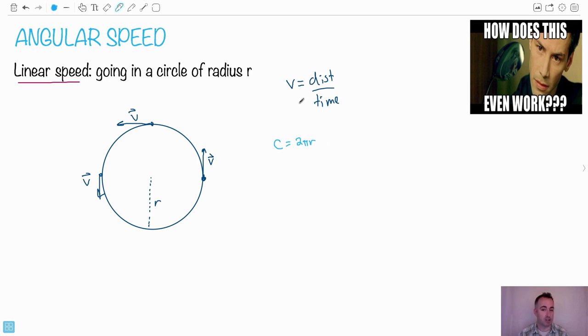So we're going to define the linear speed as the distance traveled, which is 2πr (that's the distance to go around one whole circle), divided by the time it takes to go around a whole circle, which we call t. This is your linear speed.